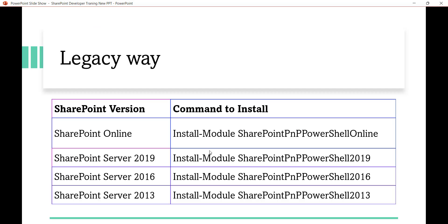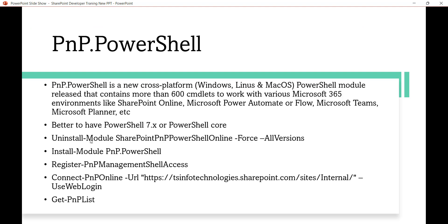First, uninstall the old module using the command: Uninstall-Module SharePointPnPPowerShellOnline -Force -AllVersions — this will remove all versions from your system. Next, run Install-Module PNP.PowerShell to install the new module so we can connect to SharePoint Online. Then run Register-PnPManagementShellAccess to grant all the required permissions — such as create, update, delete — for your Office 365 tenant.